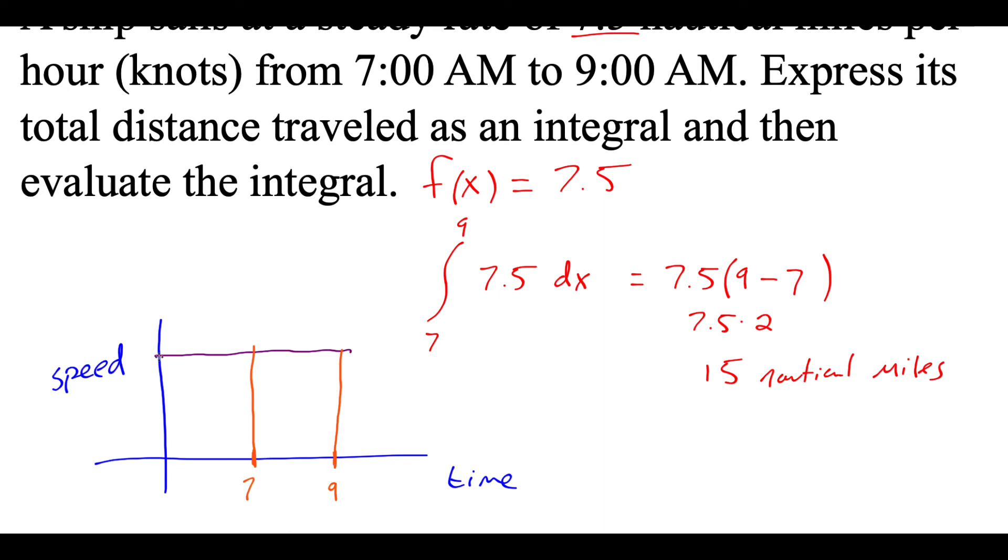The height of that rectangle is our y value, which is the speed of 7.5. The width of the rectangle is the distance between those two x values. That's kind of what we did over here when we subtract them. We found the distance between them. If we find the distance between 7 and 9, that's a distance of 2. Taking this 2 times 7.5 gives us 15. So the area underneath this curve directly relates to this integral that we did before.